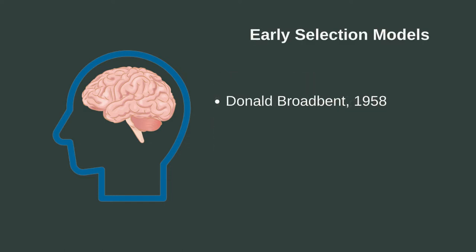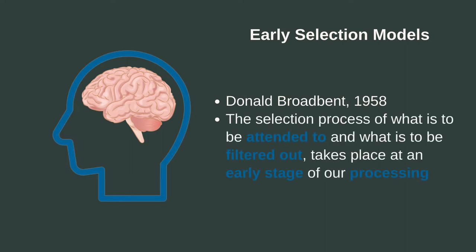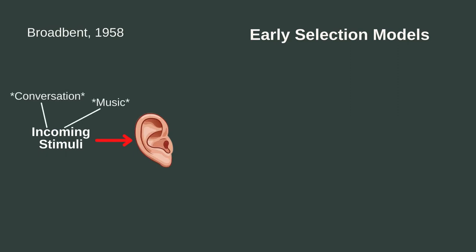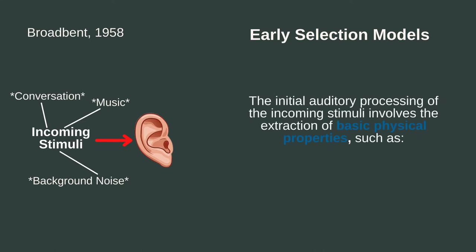Starting off with the early selection models, one of the earliest theories on this topic was introduced by Broadbent in 1958. Broadbent argued that the selection process of what stimuli is to be attended to and what is to be filtered out takes place at an early stage of our processing. When we are initially bombarded with all kinds of stimuli such as the conversation, the music, and other background noise, the initial processing of the auditory information starts. This initial processing involves the extraction of the basic physical properties of all auditory information, such as the pitch and loudness.